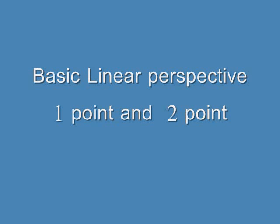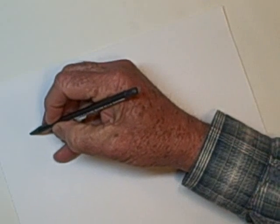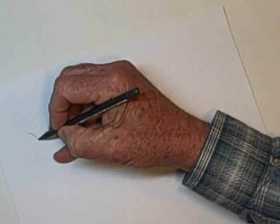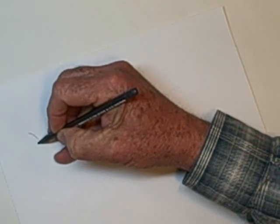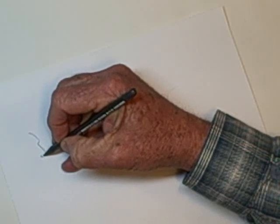Basic linear perspective has three areas: one point, two point, and three point. In this clip we're not going to deal with three point — that will come later. In order to understand it, you must first know the difference between the two. We need to recognize that there are certain qualities inherent to one-point and certain qualities inherent to two-point.